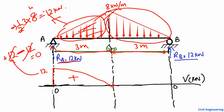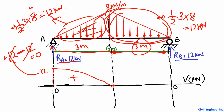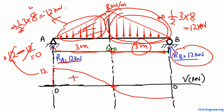For the second half, the area of that triangular load is again half base into height: base 3 meters times height 8 kilonewtons per meter gives 12 kilonewtons acting downward. Adding this 12 kilonewtons downward takes the shear force to minus 12 kilonewtons. At support B the reaction of 12 kilonewtons brings the diagram back to zero. So the shear force at B is minus 12 kilonewtons.